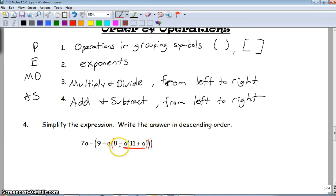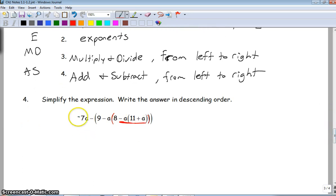Now, with it, you want to take the sign in front of it. It's actually a negative A. So my step one, I'm going to rewrite this as 7A minus parentheses 9 minus A parentheses 8. And now here's the new stuff. This becomes, when you multiply, minus 11A. And this becomes minus A squared. Okay. So that's the new thing that we just did. We just did multiplication.